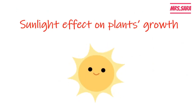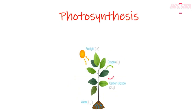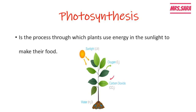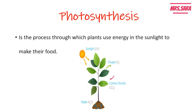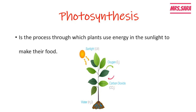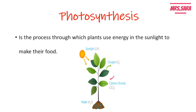Sunlight has many effects on plant growth, but before we talk about the sunlight effects, let's remember the photosynthesis process. Photosynthesis is the process through which plants use energy in sunlight to make their food. The roots take the water and the nutrients from the soil and carry it to the stem, and the stem carries the water and nutrients to the leaves, and the leaves take sunlight and carbon dioxide from the air to make the food of the plants, which is called sugar.